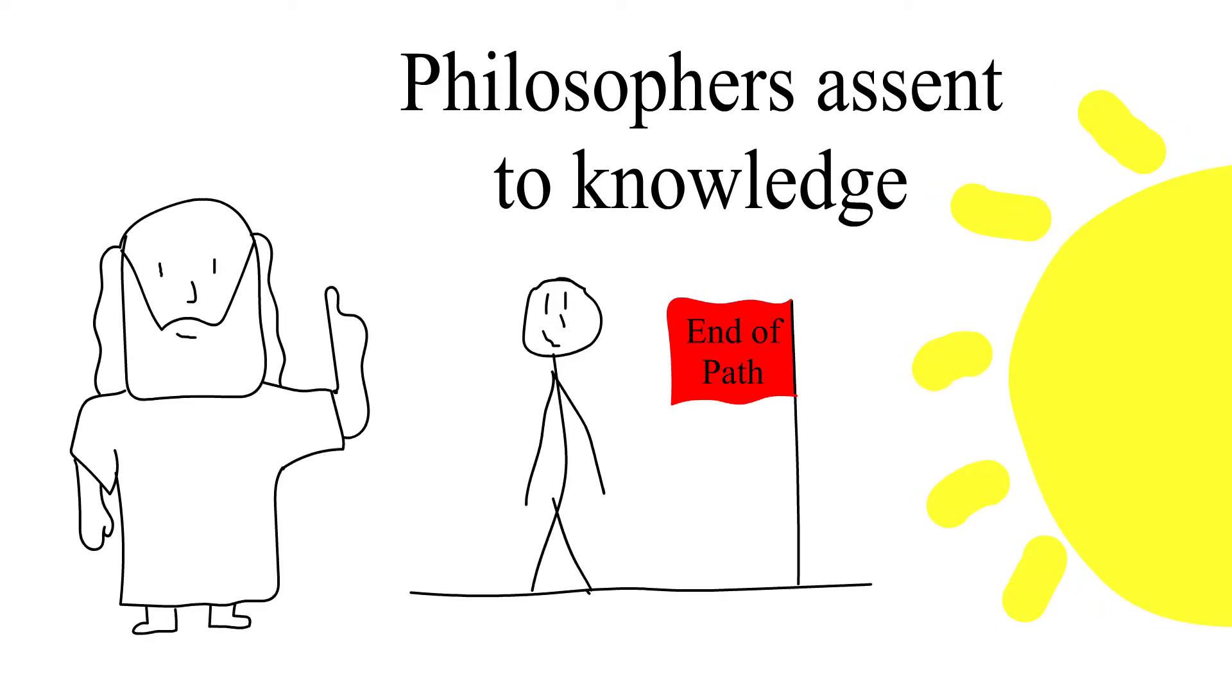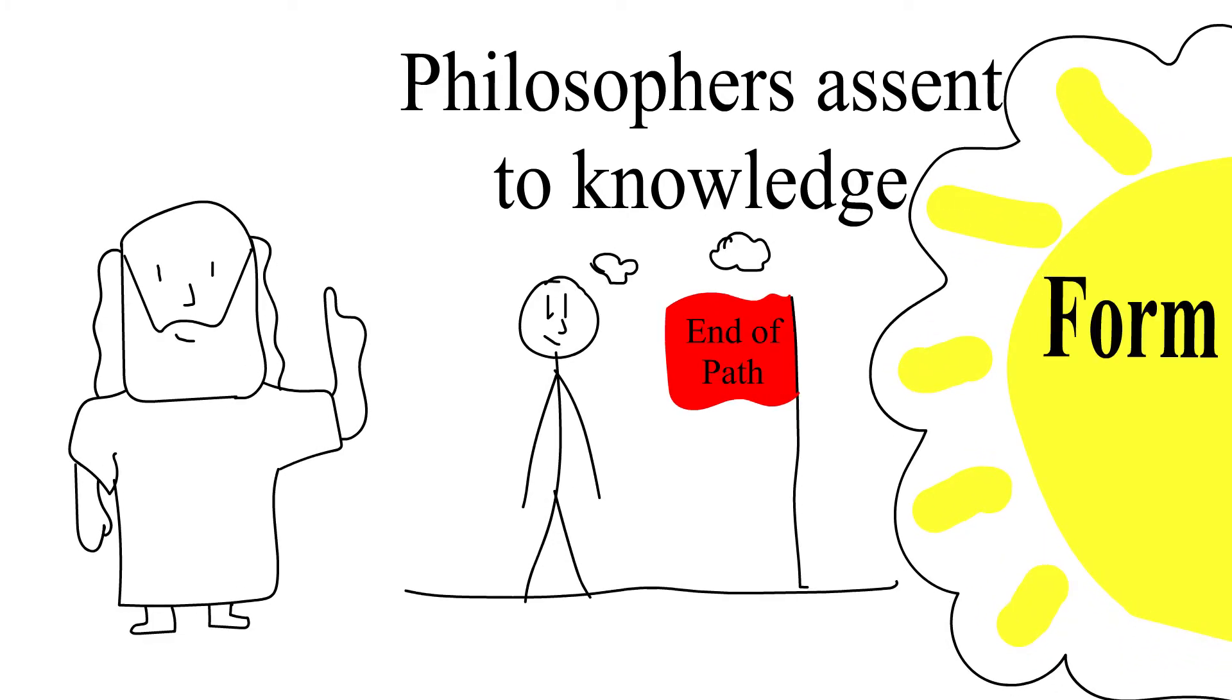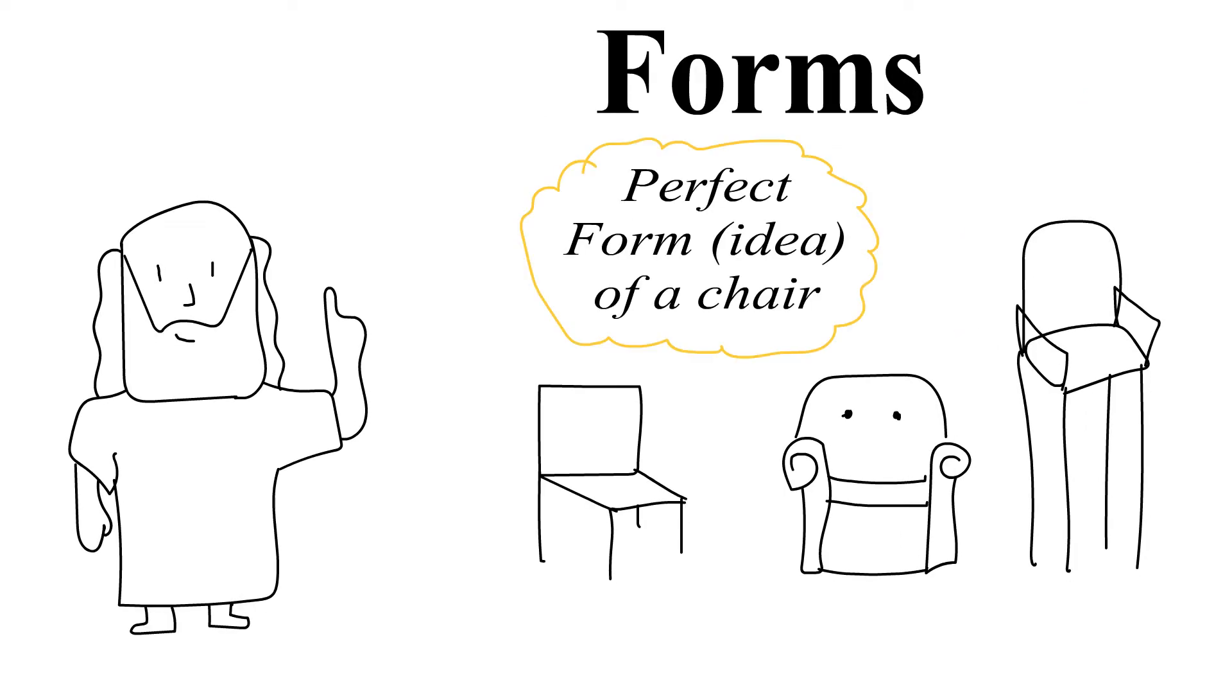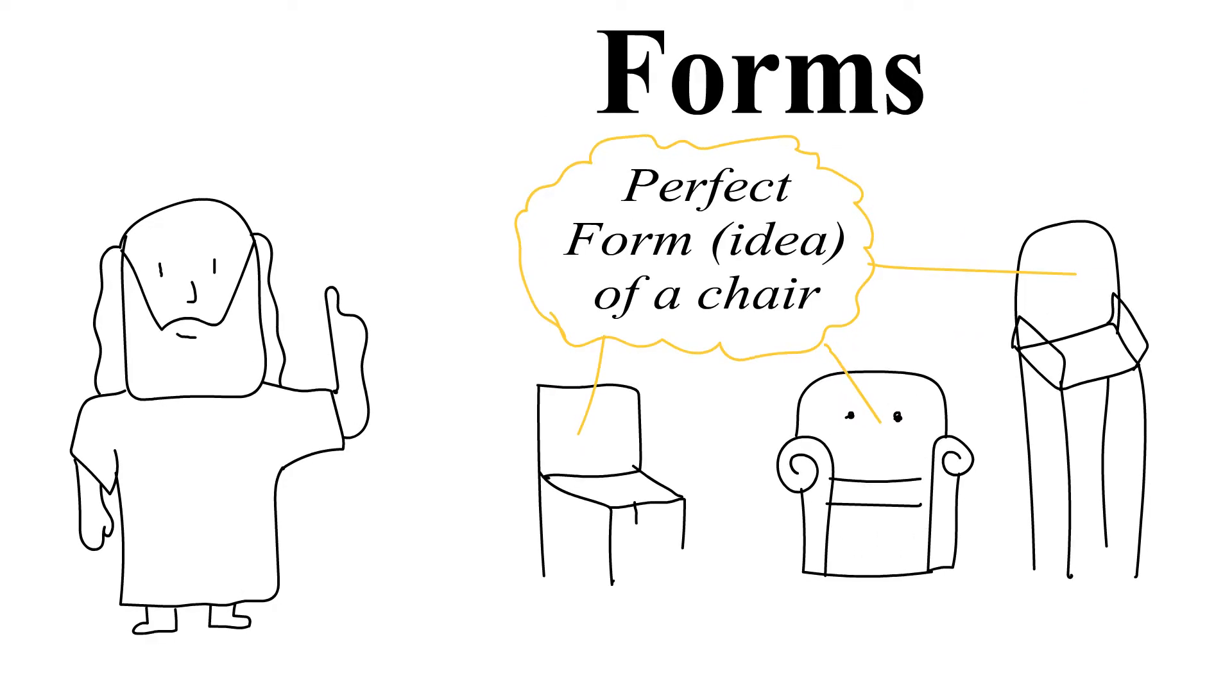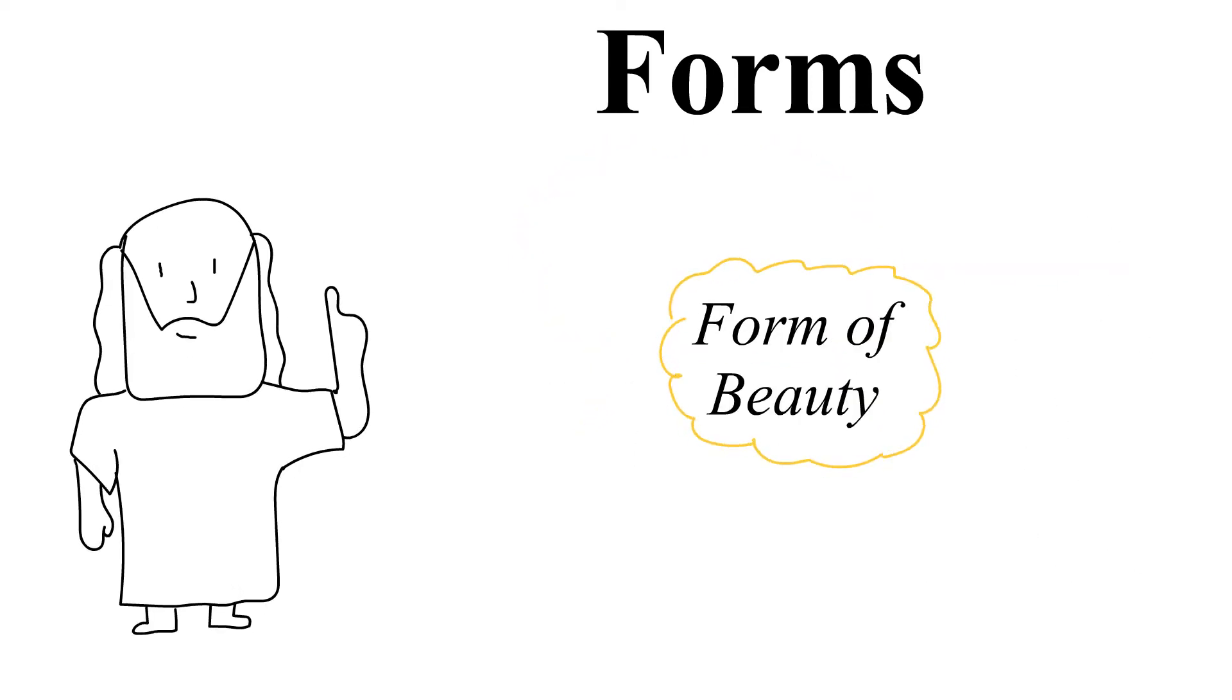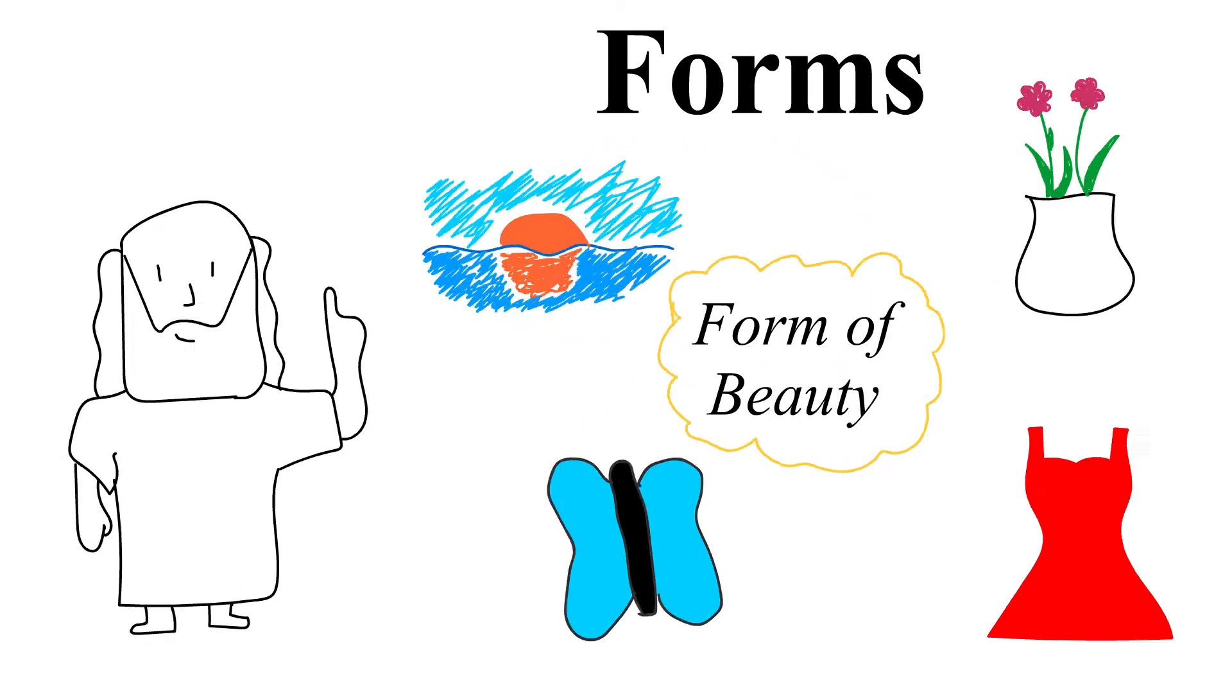The sunlight at the end of the path would be the philosopher's understanding of the forms, specifically the form of good. Physical objects are related to these forms in that they reflect a form or forms. The form of beauty, for example, can be reflected in many different and varied objects.